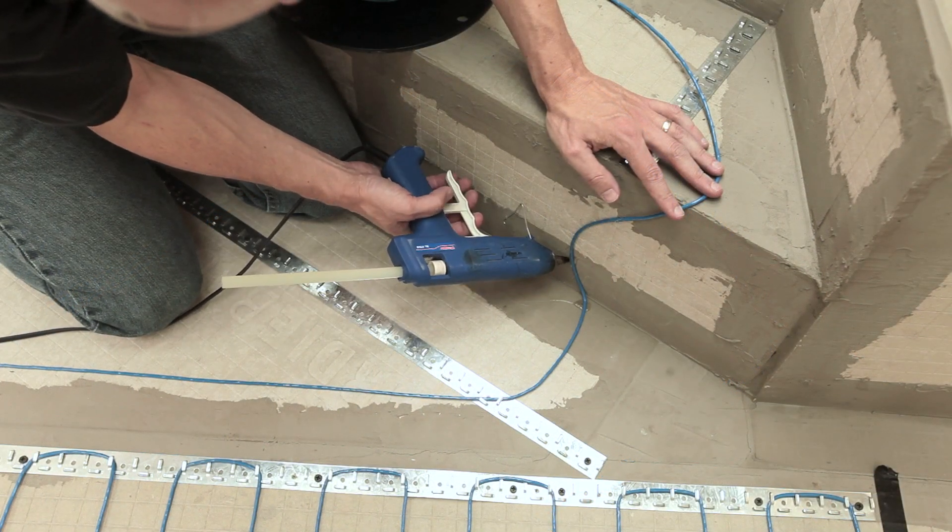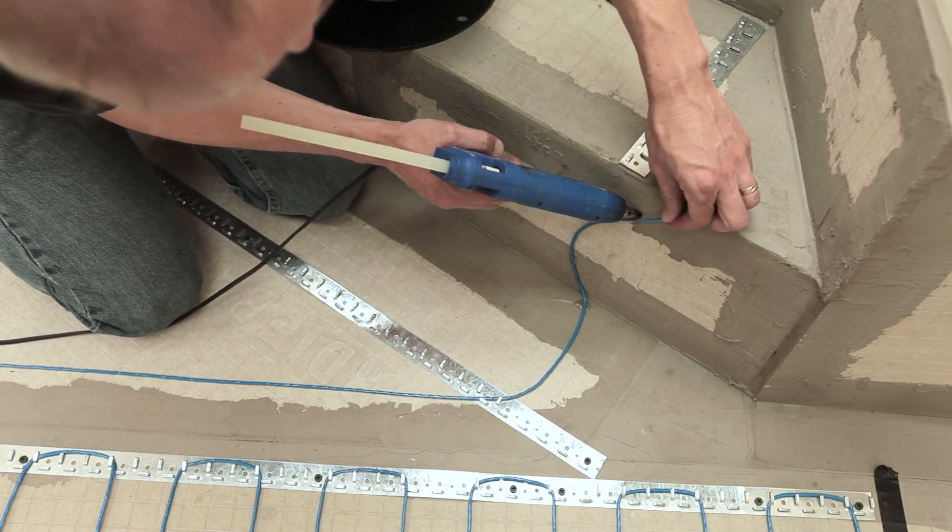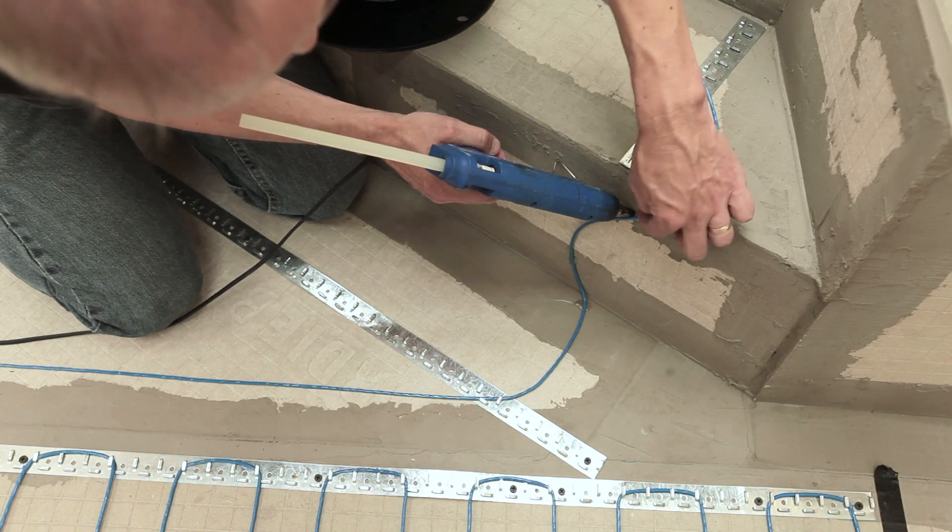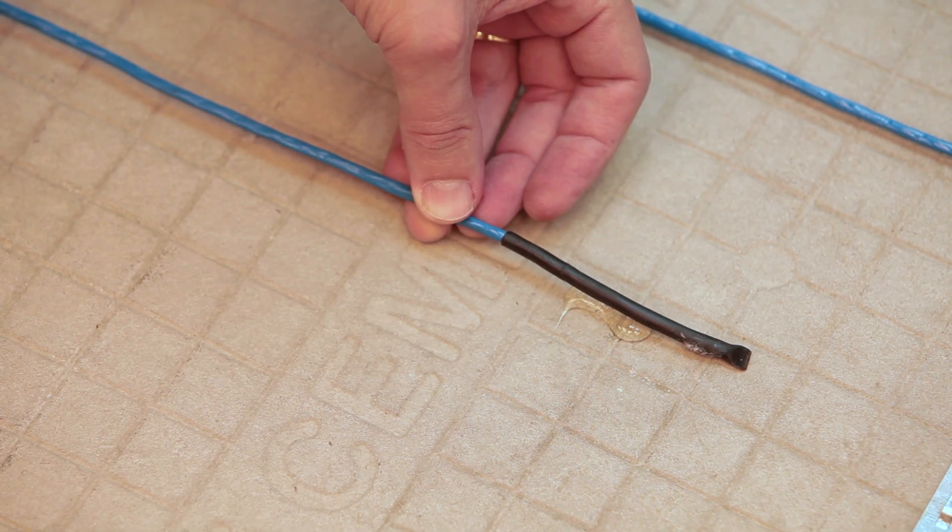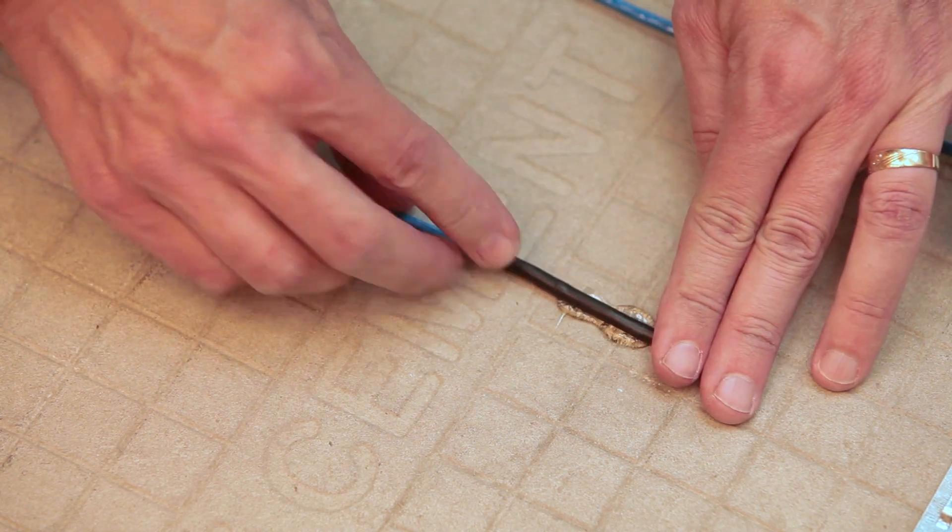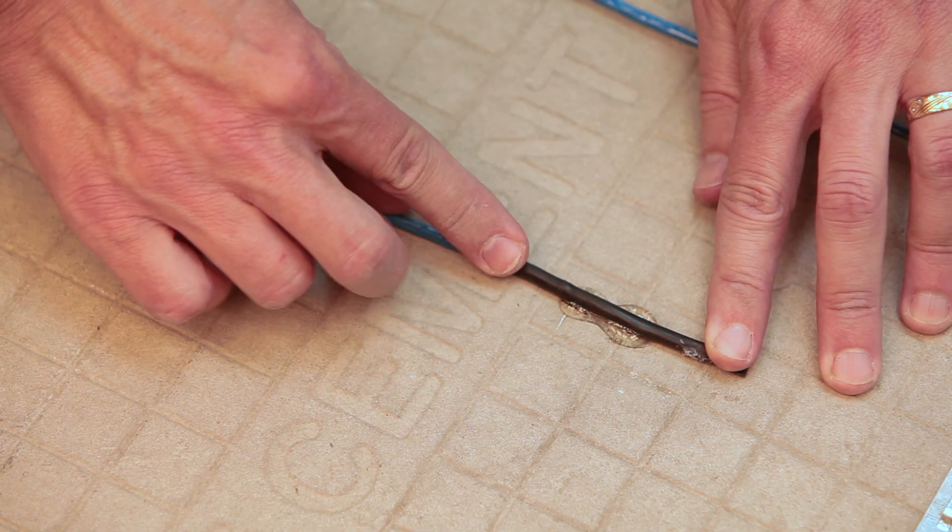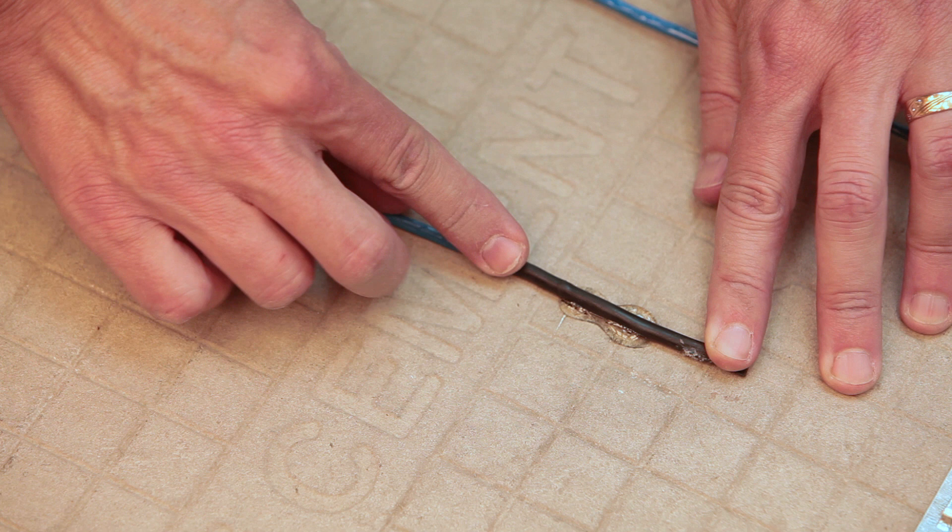In areas where warm wire changes direction without straps, hot glue can be applied to the floor surface to provide attachment. Once the end of the heating wire has been reached, attach the end splice to the floor with hot glue. Once again, it may be necessary to chisel out a portion of the floor depending on the thickness of the mortar used.